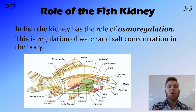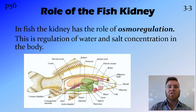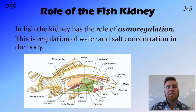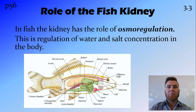Firstly, the role of the kidney in fish is for osmoregulation — that is, to regulate the amount of salt that is inside the fish as compared to outside the fish, and part and parcel with doing that is regulating the amount of water that is in the fish.